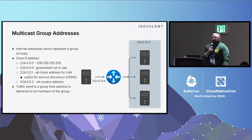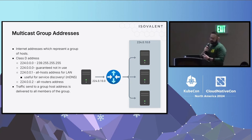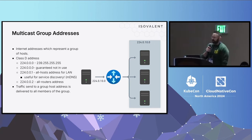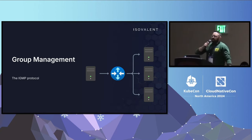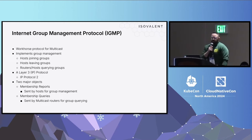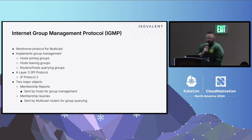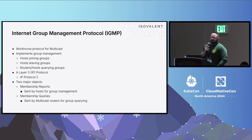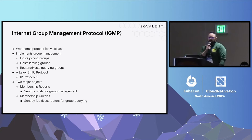So how does multicast work? The first thing we should talk about is multicast group addresses — these are class D IP addresses. When traffic is sent to these groups, the IP infrastructure replicates those packets and sends them to anyone in the group. That raises the question: how do hosts join and leave these groups? We need group management, and the IGMP protocol — Internet Group Management Protocol — does this for us. It implements leaving and joining of groups from hosts, and allows routers to query who is in a group. It's a layer 3 protocol with protocol number 2. Key objects are membership reports (how a host says it's part of a group) and membership queries (how the IP infrastructure asks who is in a group).